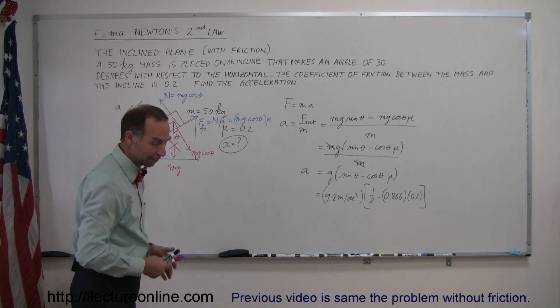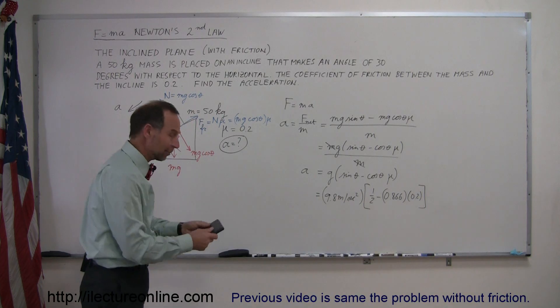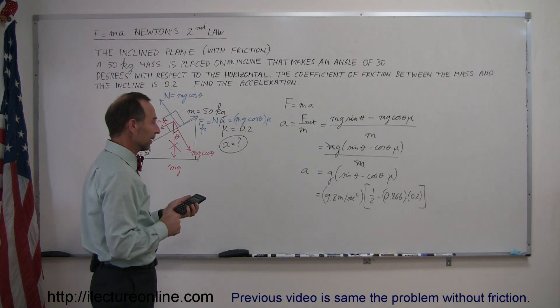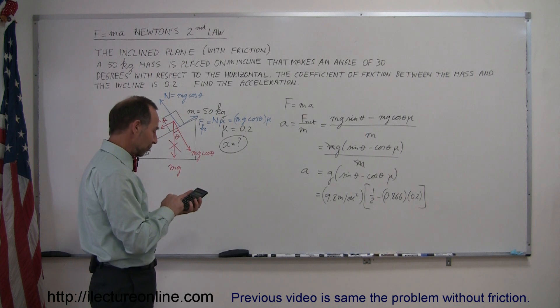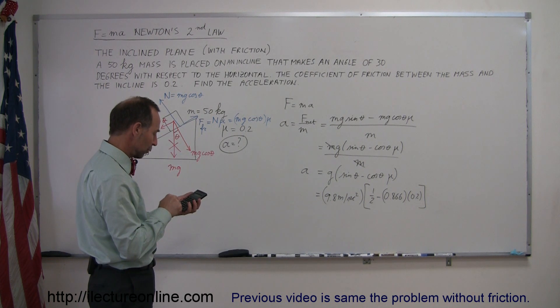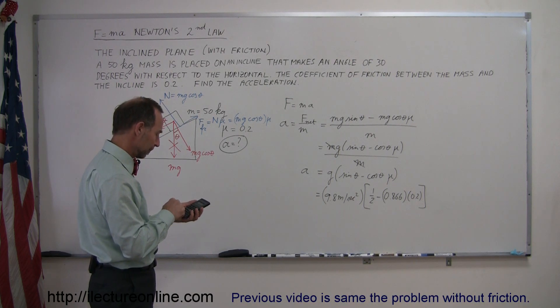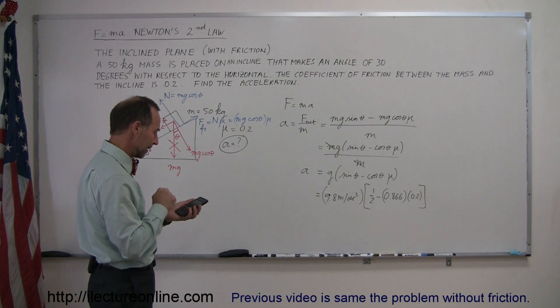Now we go ahead and work that out. Now, of course, I'm going to need a calculator for that, which I have handy right here in my back pocket. So, we take 1 half, that's 0.5, minus the product of the cosine of 30 degrees times 0.2.